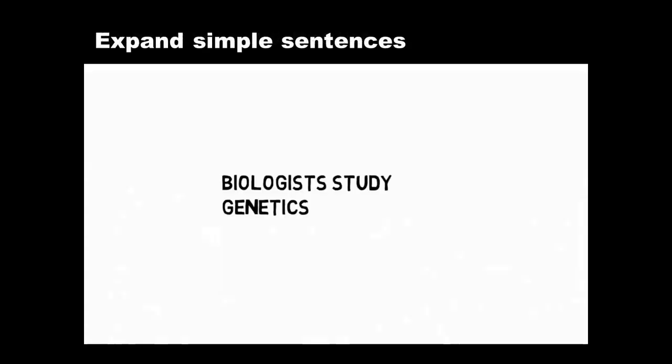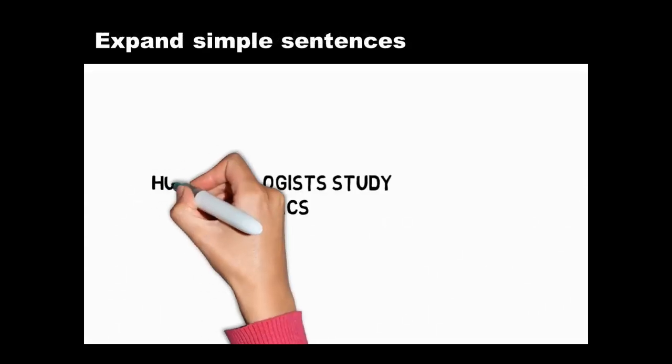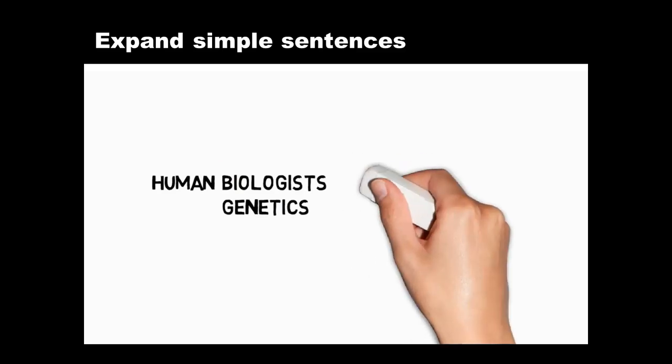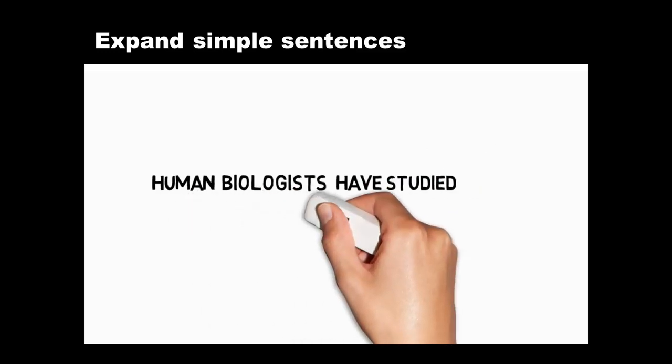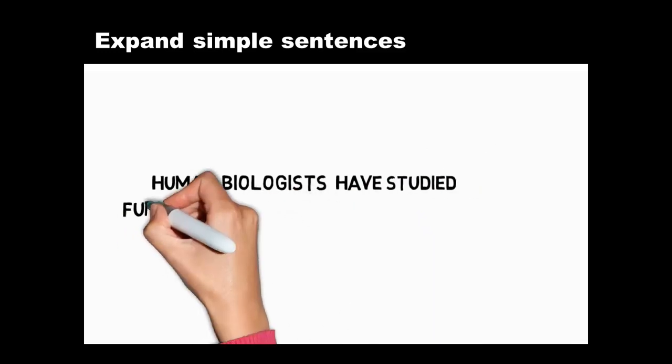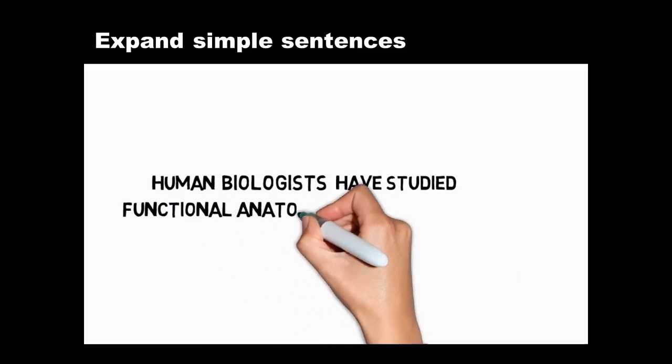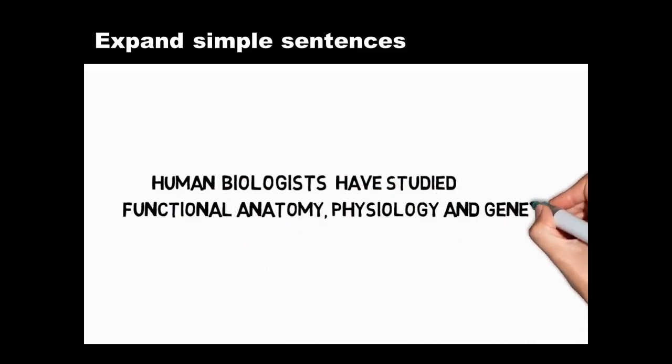You can expand simple sentences by adding more words to the subject, verb, or object, making the subject more precise, changing the verb form if you need to, or qualifying your object, narrowing its scope like this. These techniques help you flesh out your ideas and make your writing more interesting to read.